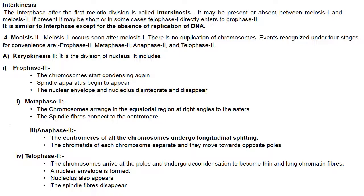In karyokinesis II, prophase II begins with chromosomes starting to condense again, the spindle apparatus begins to appear, and the nuclear envelope and nucleolus disintegrate and disappear. In metaphase II, chromosomes arrange in the equatorial region at right angles to the asters, with spindle fibers connecting to the centromeres. In anaphase II, centromeres of all chromosomes undergo longitudinal splitting and chromatids of each chromosome separate and move towards opposite poles. In telophase II, chromosomes arrange at the poles, undergo decondensation to become thin chromatin fibers, the nuclear envelope is formed, nucleolus appears, and spindle fibers disappear.